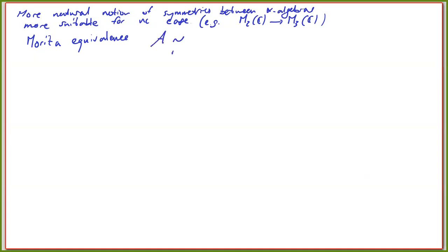Morita was after an equivalence of representation theory: you have a category of representations of one object or one ring and try to connect it to the other. If these categories are equivalent, you call these rings Morita equivalent. We do this more concretely using the language of modules.